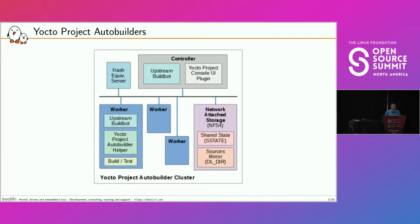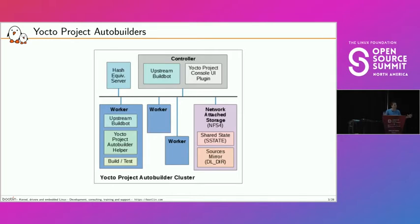The auto-builders — this comes from the Yocto Project documentation. We have a controller that manages build requests and pushes them to workers. The controller is actually one of the workers. On the side, we have a NAS with the shared state cache, shared across all workers. We also have a source mirror (a DLDR) shared by all workers.